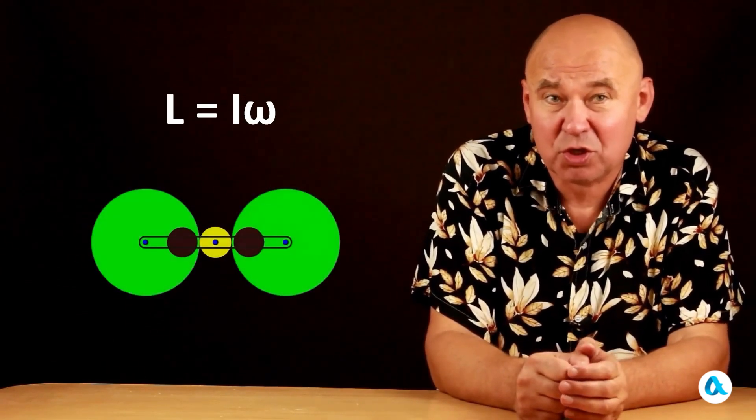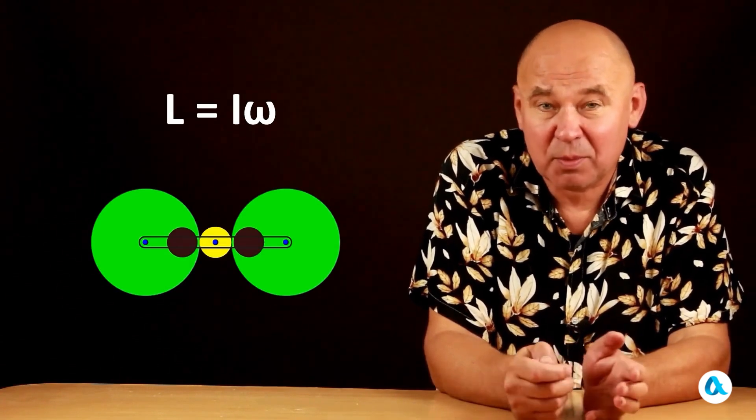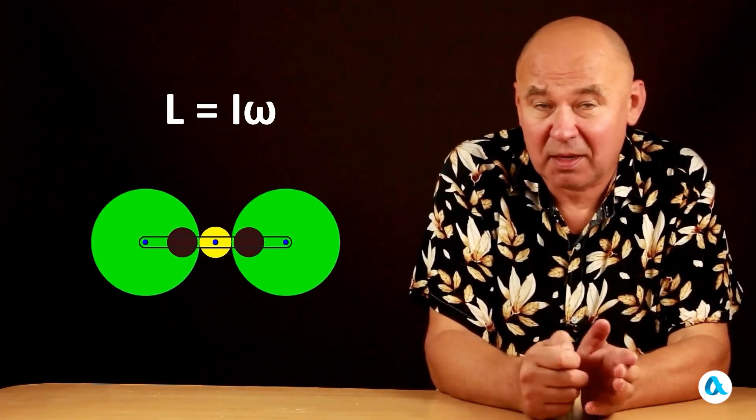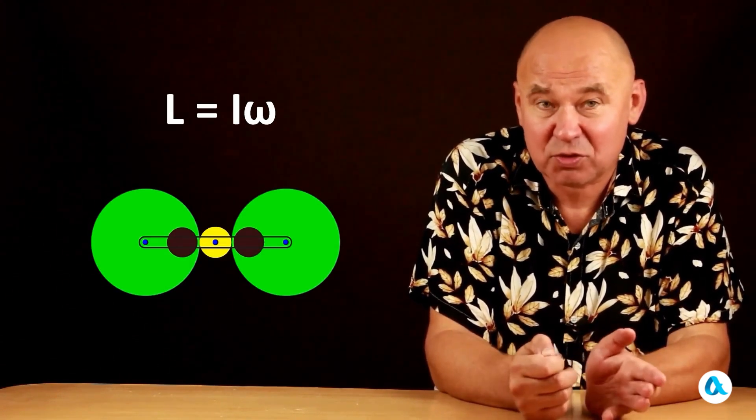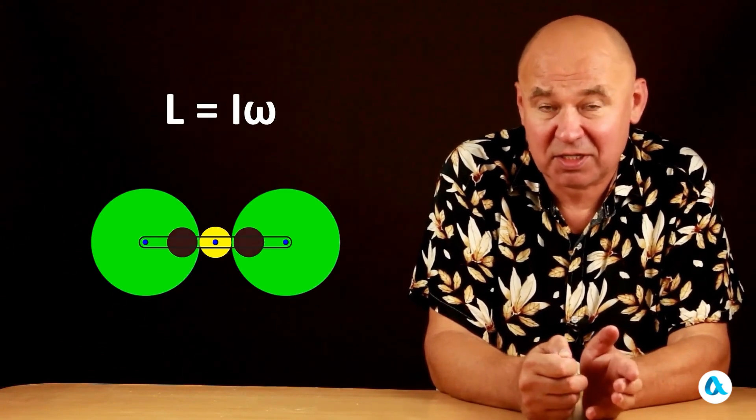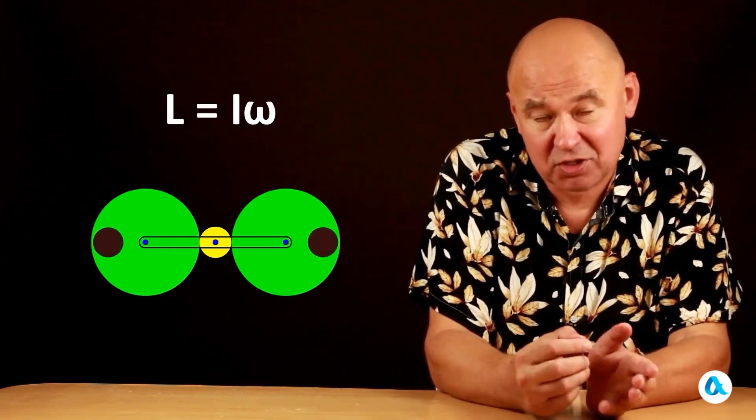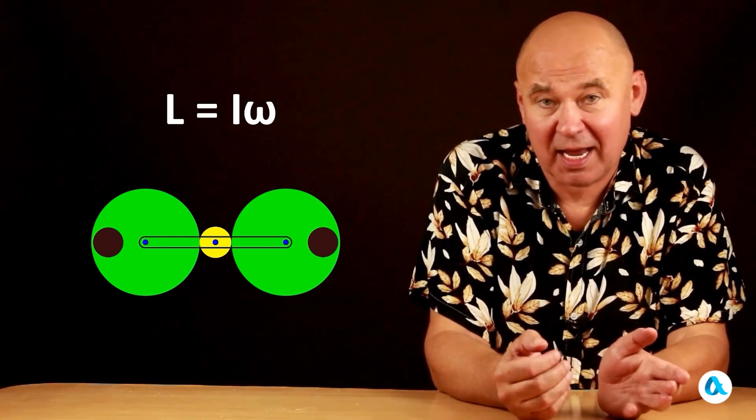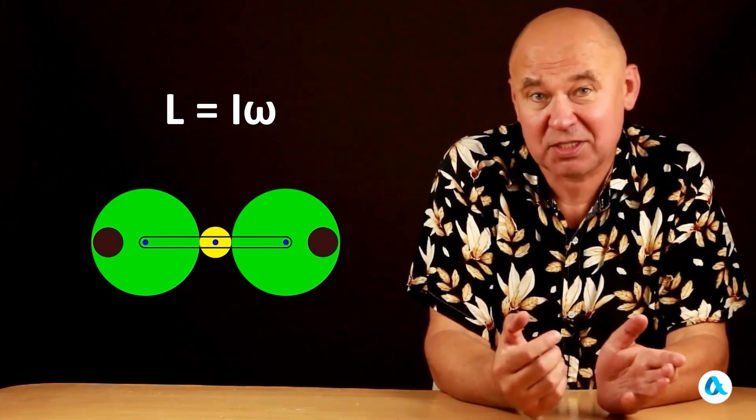When the eccentrics approach close to the axis, the moment of inertia is small, so the angular velocity must increase sharply. And when the eccentrics move far from the axis, the moment of inertia significantly increases, and the angular velocity decreases accordingly.